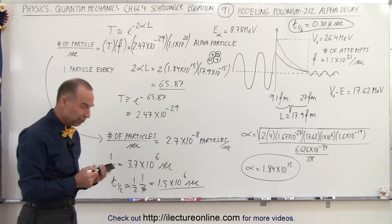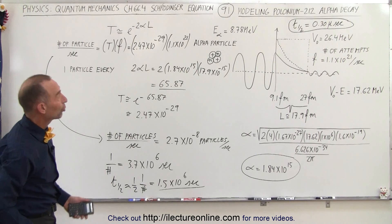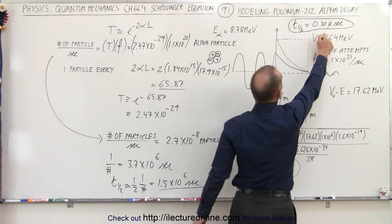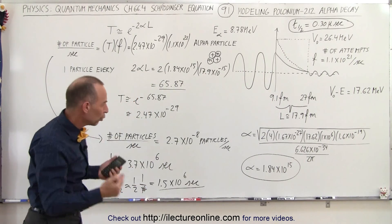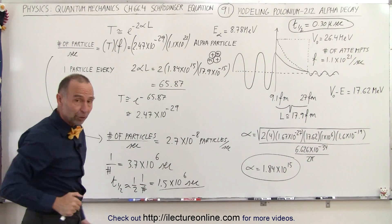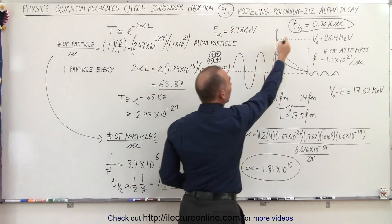Now that's what we've calculated, but the observed half-life is much, much smaller than that—0.3 microseconds. So why the enormous difference between what we're observing and what we're calculating if we calculate it by using what we've learned so far?